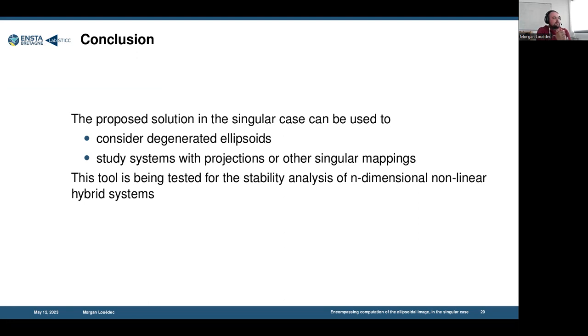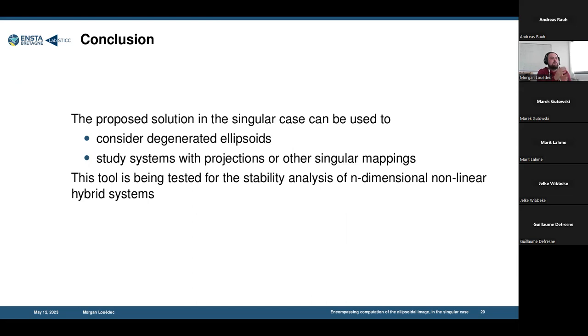To conclude, the idea of studying the singular case for this ellipsoidal propagation is interesting when we want to consider degenerated ellipsoids in our state-based system, especially for systems which have projection or other singular mappings. Right now, I'm trying to use this tool to study the stability of nonlinear hybrid systems with several mappings in chain. Thank you for your attention.